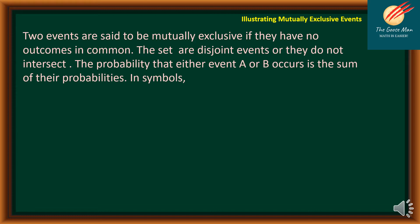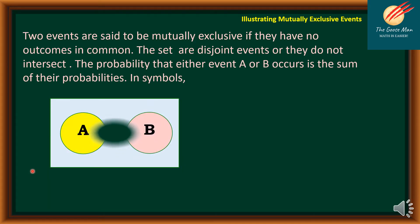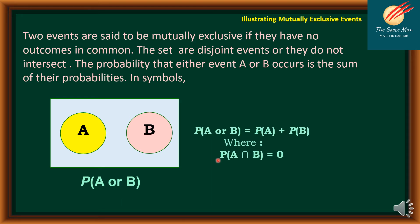Let's look at our Venn diagram. We have sets A and B, and there is no intersection between sets A and B. So the probability of A or B — in symbol — is equal to the probability of A plus the probability of B, wherein the intersection is a null set.